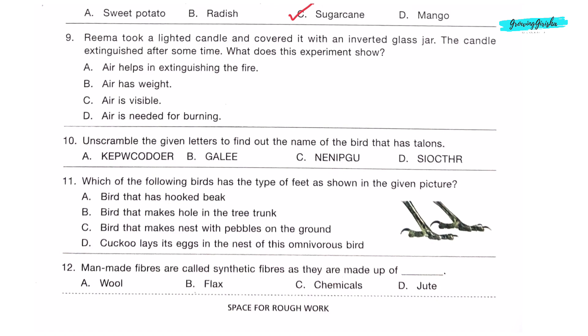Question 9: Rima took a lighted candle and covered it with an inverted glass jar. The candle extinguished after some time. What does this experiment show? The experiment showed that air is needed for burning. Option D is the correct answer.